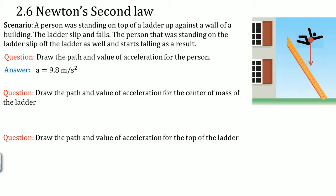Next, you want to draw the path and the value of acceleration for the center of mass of the ladder. The center of mass for the ladder, which is right in the middle, it's right there. It's represented by green. It's right in the middle of the ladder. This also falls at 9.8 meters per second squared, because both of them are experiencing the force of gravity.